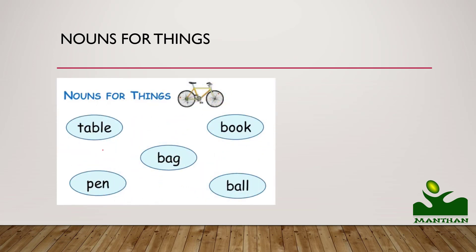Nouns for things: table, pen, bag, ball. Joh bhi cheezein ap apne aspas dikhti hain — kitchen mein, bathroom mein, bedroom mein, ghar mein, school mein — choti choti cheezein apne aspas, un sab ka naam hain. So those are also nouns.